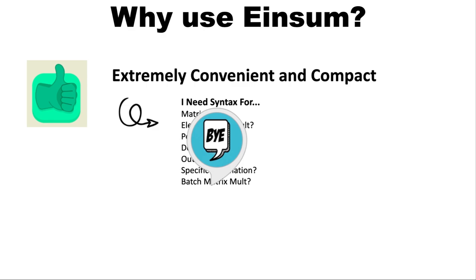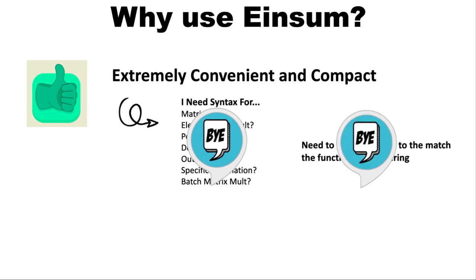Also, let's say you need to permute the input to match the function's call ordering — batch matrix multiplication, I'm talking about you. With einsum, you can say goodbye to that as well. You don't even need to permute the output. That can also be done inside einsum, so I guess we can say goodbye to that too.